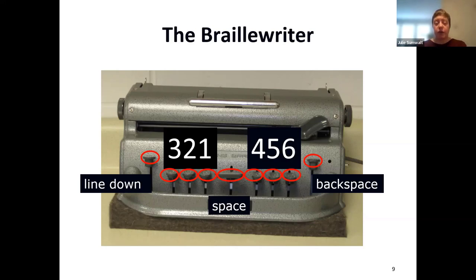A braille writer has a line down key to go to the next line, a space key, and a backspace key. Notice that the number of keys for the dots don't go from left to right one through six. Dots one, two, three on the left side start from the center and go out, then the space bar in the middle. Then it goes in numerical order — four, five, six — for the right side of the cell.